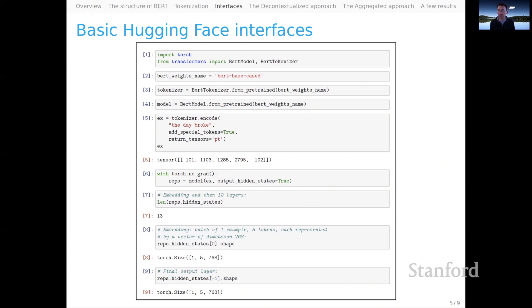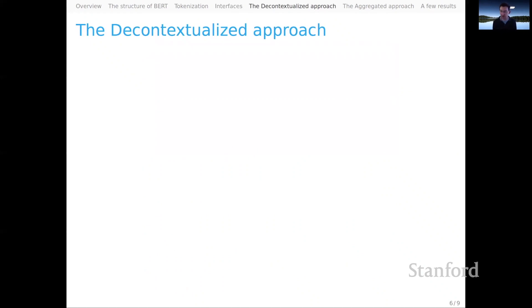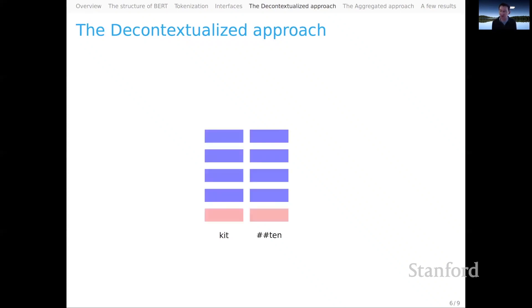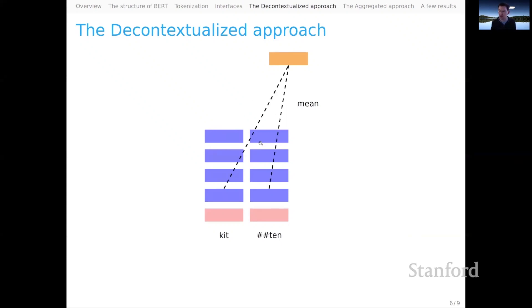Those are the preliminaries. Let's think about how we could derive some static representations. The first approach that Bomasani et al. consider is what they call the decontextualized approach — this is the simplest thing possible. We are just going to process individual words as though they were sequences and see if BERT can make any sense of them. So we would feed in a word like 'kitten,' allow the model to break it apart into subword pieces, and simply process that with the model to get a full grid of representations. Because we potentially have subword tokens, we need some pooling function — we could use mean to get a fixed static representation of dimension 768 for this individual word. We don't have to use the final layer, and we could consider pooling functions like max, min, or last, which would just use the representation corresponding to the final subword token.